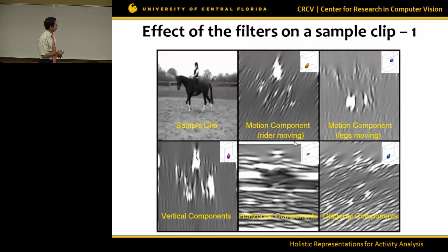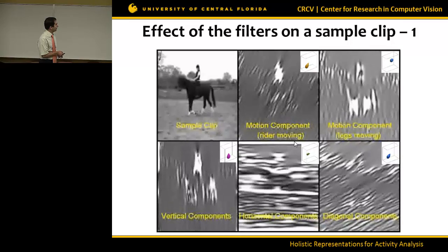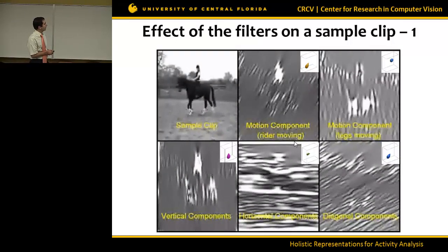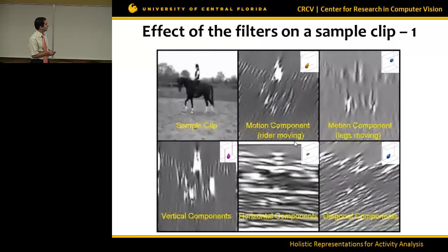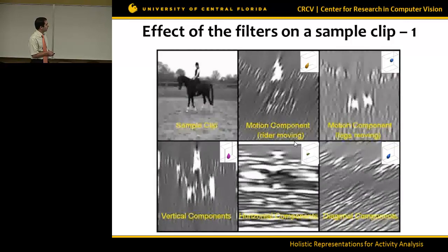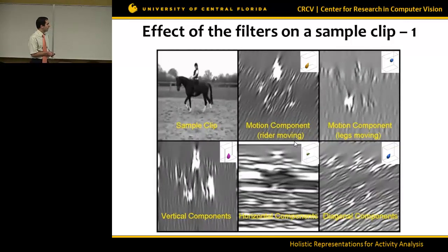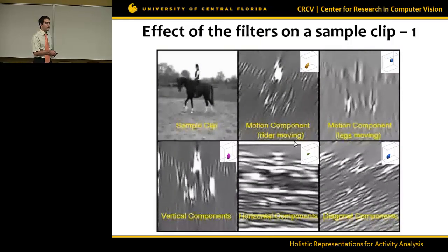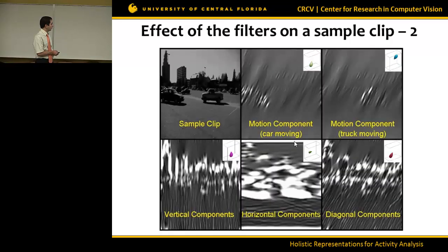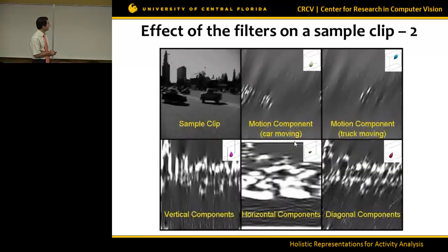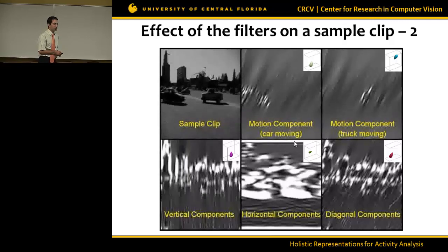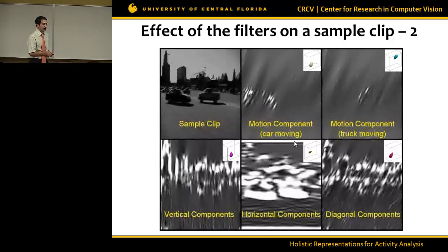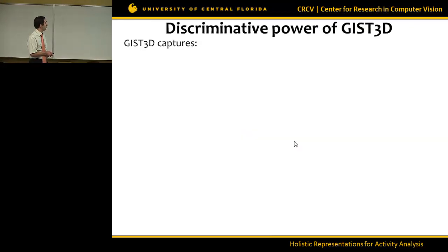Here is an example with a horse riding action. The first filter captures the motion of the rider, while another captures the motion of the legs. Some filters capture edge components: one captures vertical components, one captures horizontal, and one captures diagonal. In another example with two cars moving differently, one filter captures the first car and another captures the second car. So our descriptor can capture both motion and scene information.